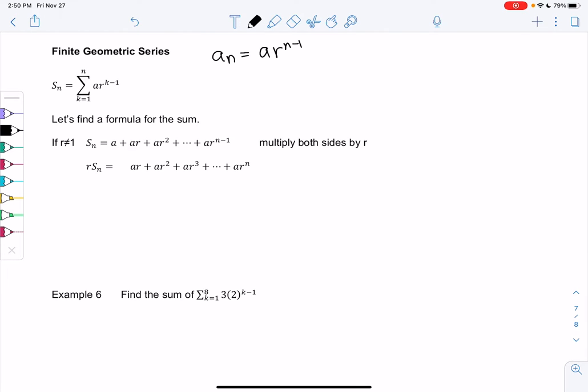Let's find a shortcut formula, then we'll do some examples. We don't always want to add 20 terms because it takes a while. So S_n would be a plus ar plus ar squared all the way up to ar to the n minus 1, just finding each individual term and finding the sum.